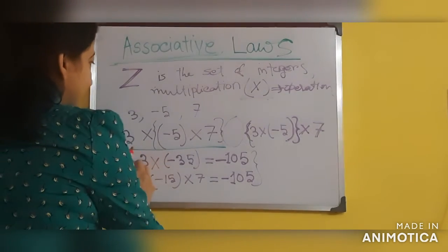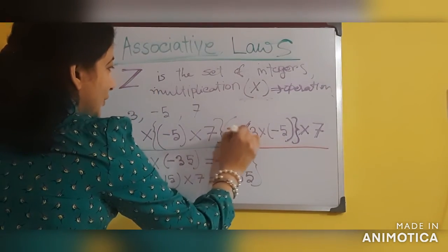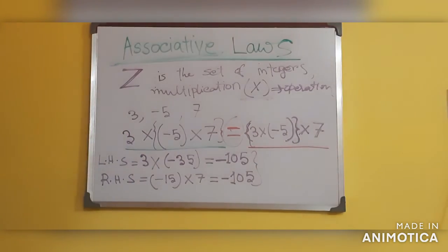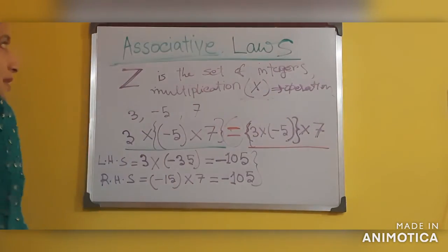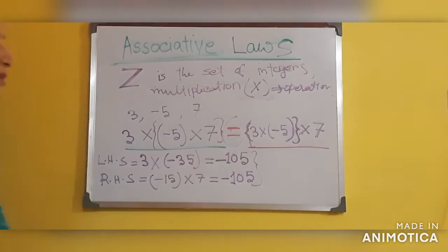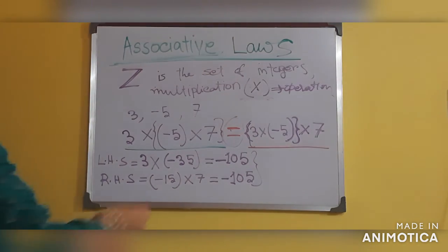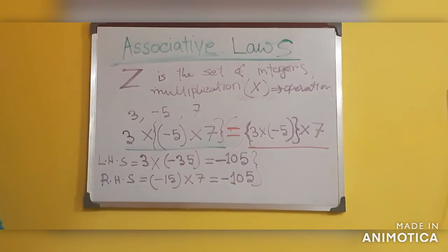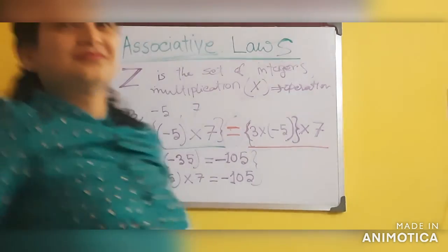Since LHS equals RHS, we can write the equal sign, and that means multiplication on the set of integers Z is associative. If the results were not the same, we would say the operation is not associative on that set. Like, share, and subscribe. Bye bye.